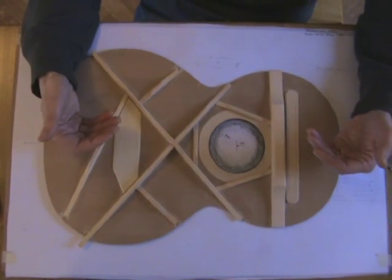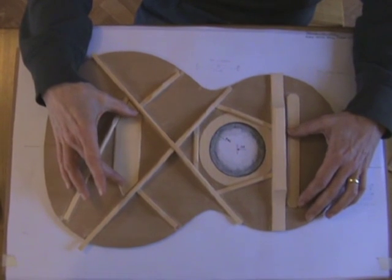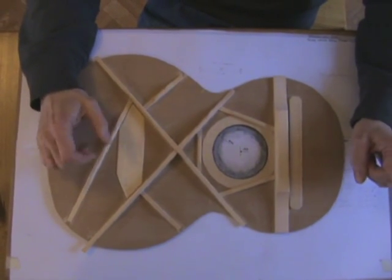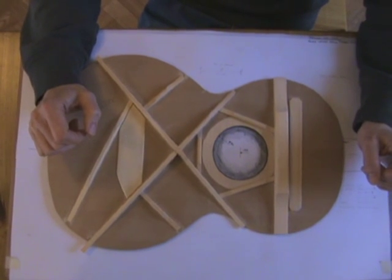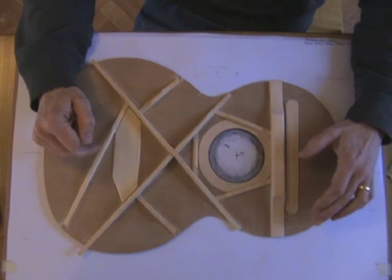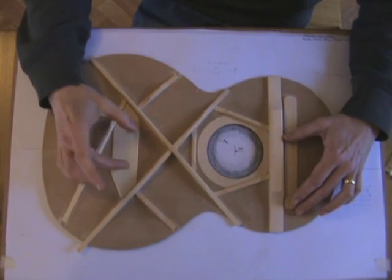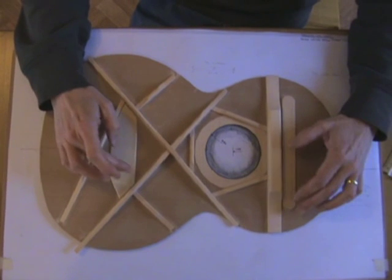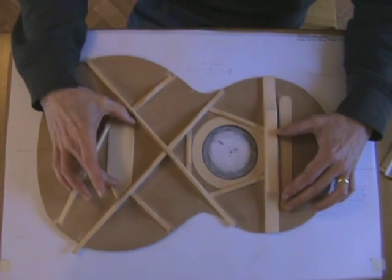What this plate does is offer a little bit of stability underneath the bridge where there's a lot of tension on the soundboard. Also, you're going to drill a series of holes here to allow the strings to come through, and the ball ends, if this plate wasn't here, they would pull straight through the cedar and into the bridge.